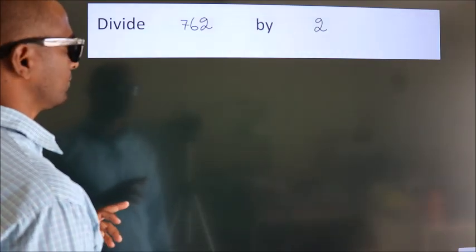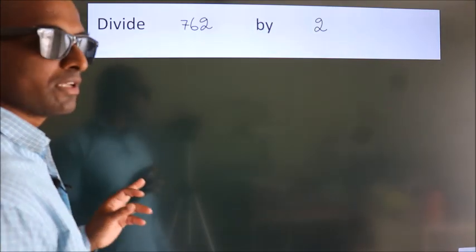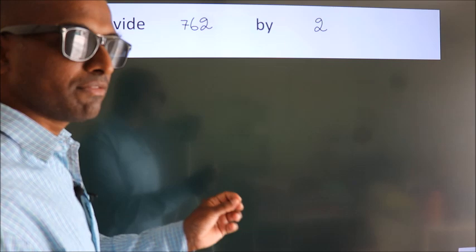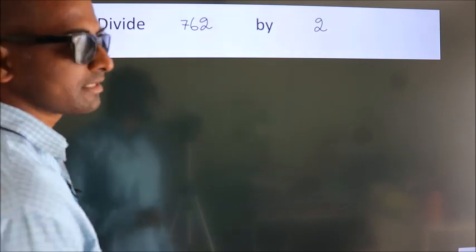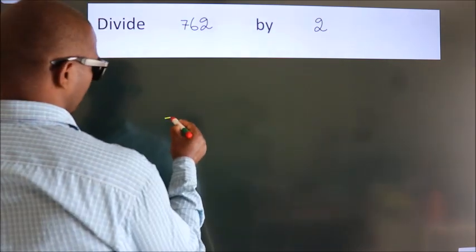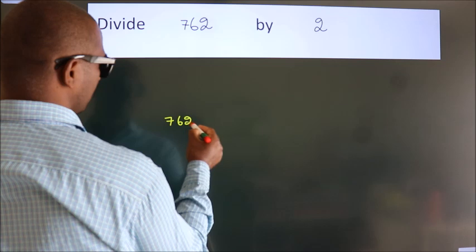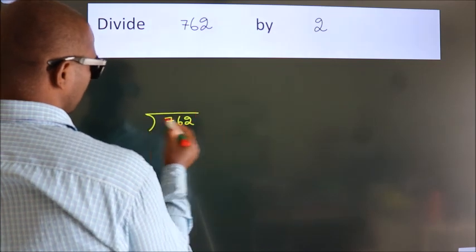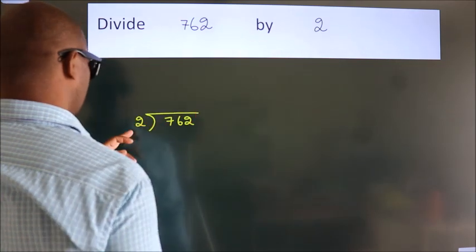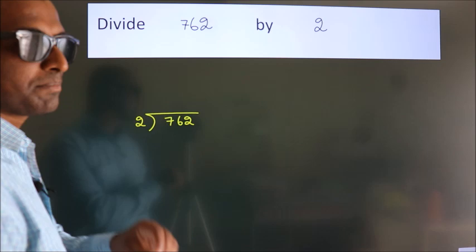Divide 762 by 2. To do this division, we should frame it in this way: 762 here, 2 here. This is your step 1.